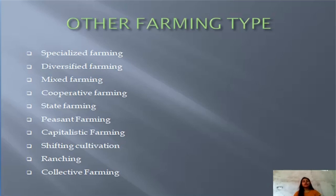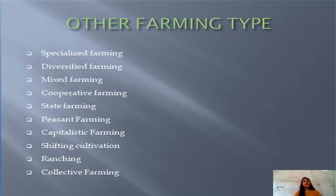In cooperative farming, farmers work together with a cooperative nature. In state farming, farming is occupied by the state government. Peasant farming is done on rented land. Capitalistic farming is done by richer persons for commercial use. In shifting cultivation, soil productivity is lost due to growing the same crops year after year, then crops are shifted to another burnt land — also called Jhum cultivation or land rotation. Ranching means raising livestock, particularly cattle.